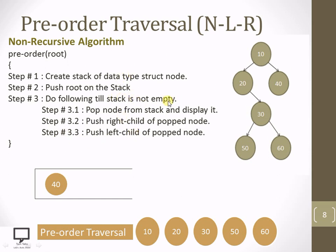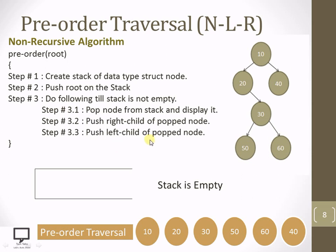Go for the next iteration to check whether the stack is empty. Stack is not empty, so pop top of the stack — which is 40 — and display it. Both left and right children are not present as 40 is a leaf node, so skip both steps. Now the stack is empty, so we stop. In this way, we can traverse the given tree using pre-order traversal with the non-recursive algorithm. The result is 10, 20, 30, 50, 60, 40.